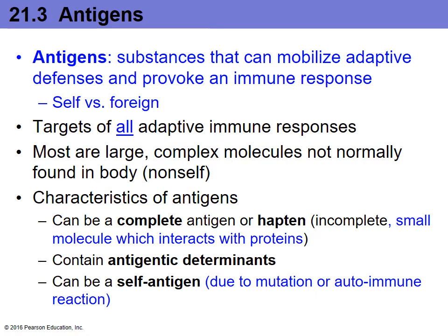For our immune system to be completely proficient, it not only needs to recognize foreign antigens and successfully attack them — it also needs to leave the self-antigens alone. If your body starts attacking your self-antigens, that is how you develop an autoimmune disease.